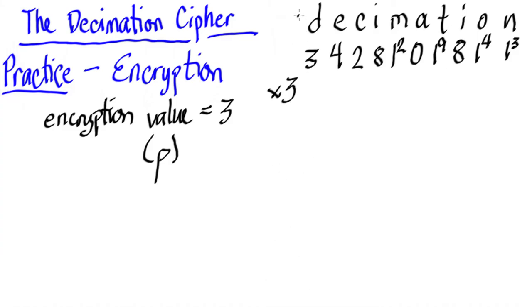So hence, what we have is 3 times 3 is 9, 4 times 3 is 12, 2 times 3 is 6, 8 times 3 is 24, 12 times 3 is 36, 0 times 3 is 0, 19 times 3 is 57.